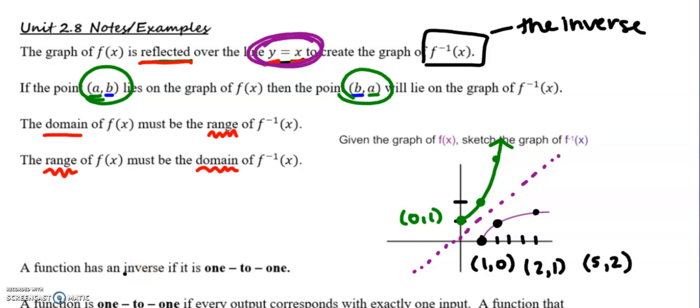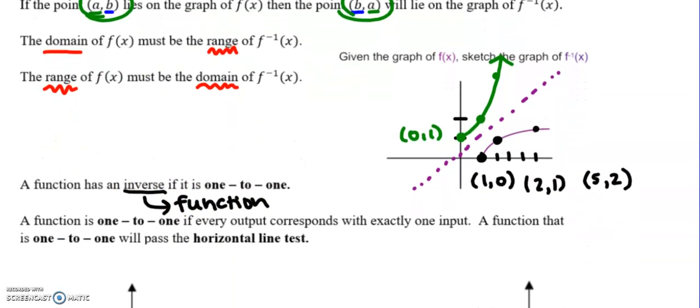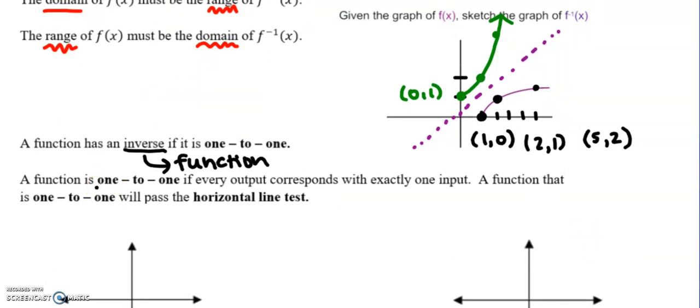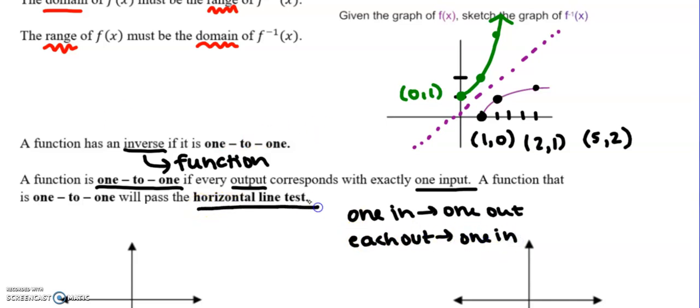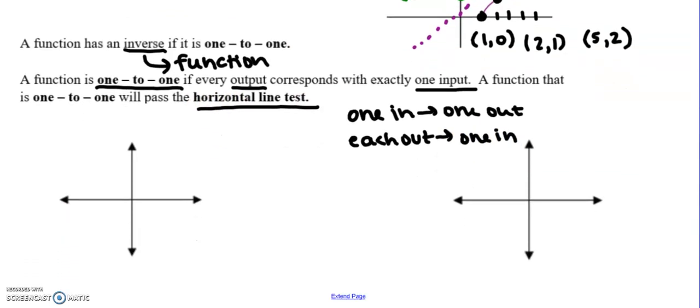A function will have an inverse which is also a function if that original function was what we call one-to-one. And a function is one-to-one if every output corresponds with exactly one input. You are used to one in produces one out, and that's how we have a function. Well, now it's also that each out only had one in. That's going to pass the horizontal line test.